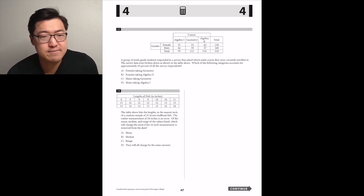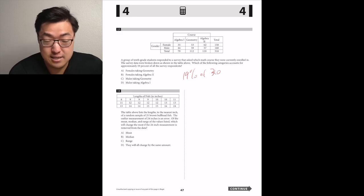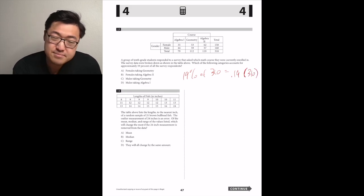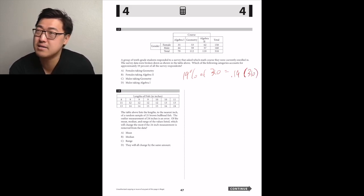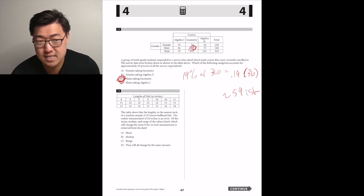A group of 10th grade students responded to a survey that asked which math course they were currently enrolled in. The survey data were broken down in the table above. Which of the following categories accounts for approximately 19 percent of all survey respondents? So how many respondents? There's 310. 19 percent of 300 would be 19 times 3, which would be 57. 19 percent of that extra 10 would be like another 2. So I think it's gonna be close to like 59-ish. A, females taking geometry, 53. I think too small. B, females taking algebra 2, 62, maybe. C, males taking geometry, 59. Nice. Males taking algebra 1, 44. I think it's C.